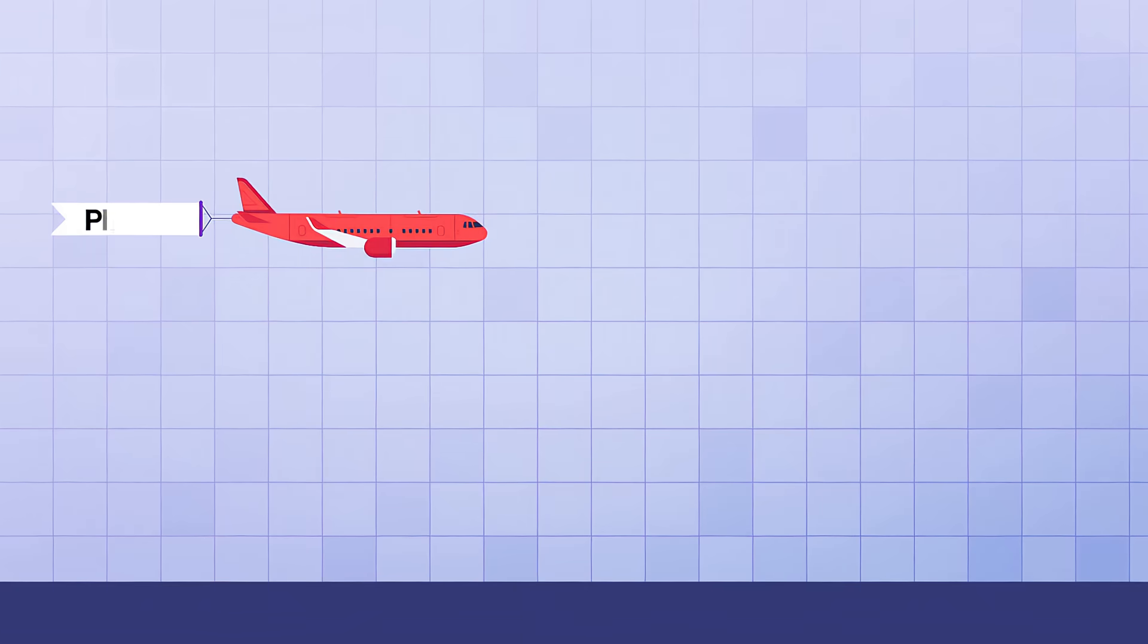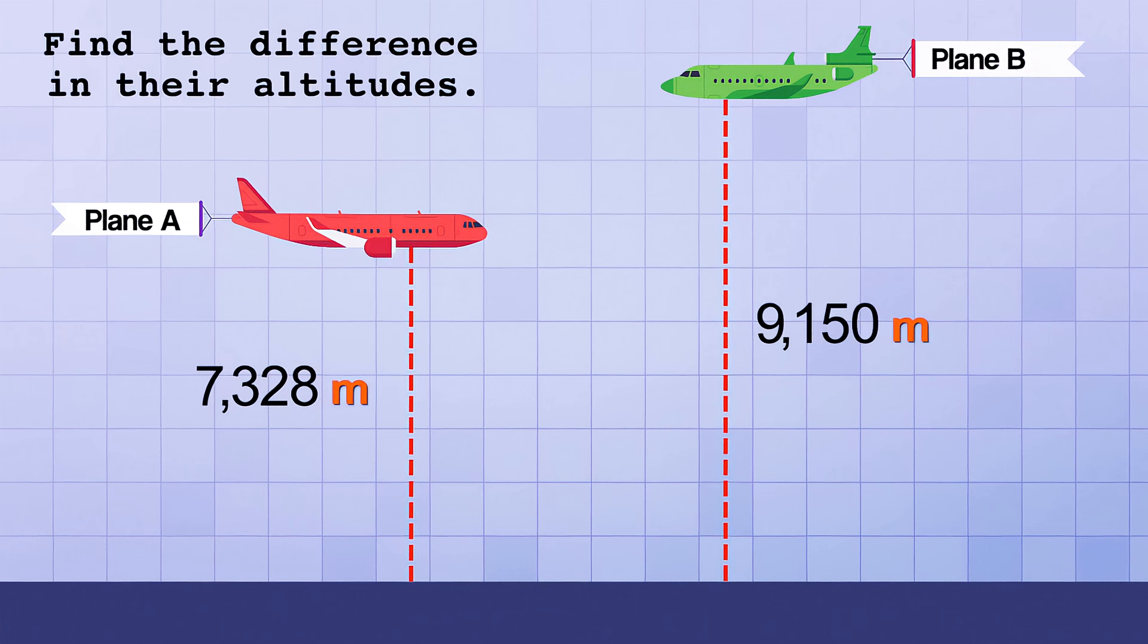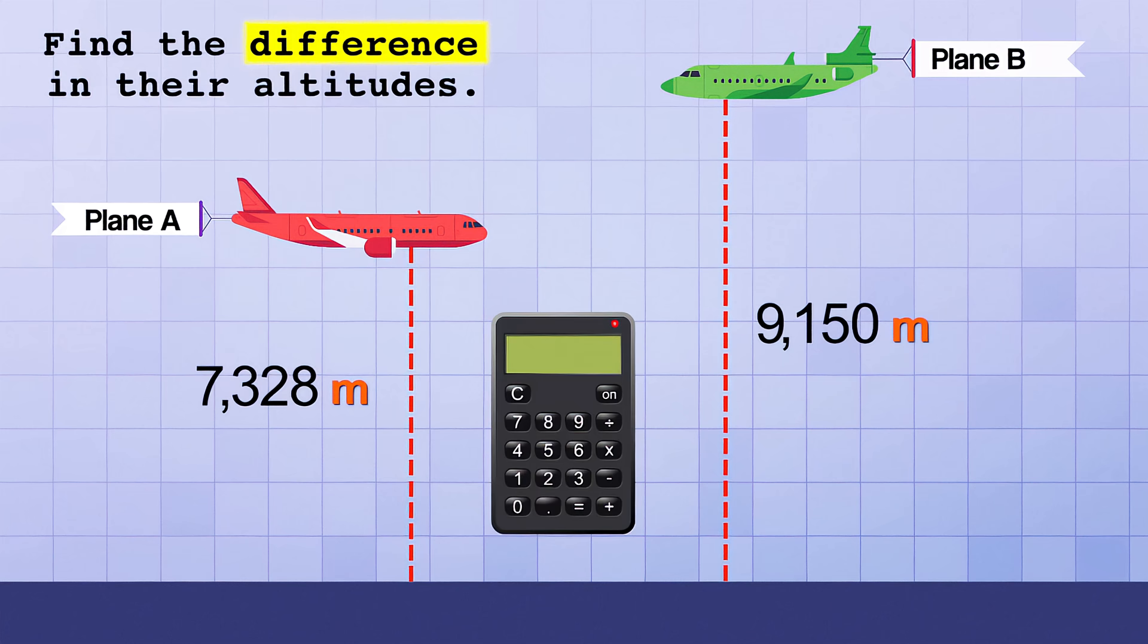Let's say an airplane is flying at an altitude of 7,328 meters. And another plane, plane B, is flying at an altitude of 9,150 meters. And the problem asks you to find the difference in their altitudes. You know that means you need to subtract, so you quickly get out your calculator and start typing in the first number. But as soon as you get the 7,328 entered and hit the subtract button, you realize the second altitude is bigger. That means you'll have a negative number as your answer. Should you start over and type the bigger number first?